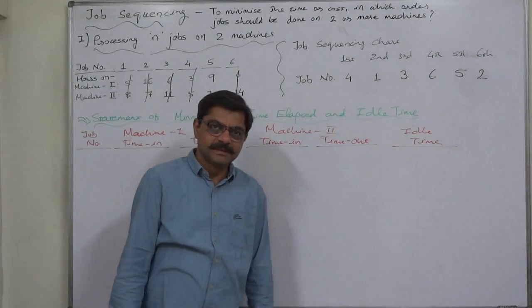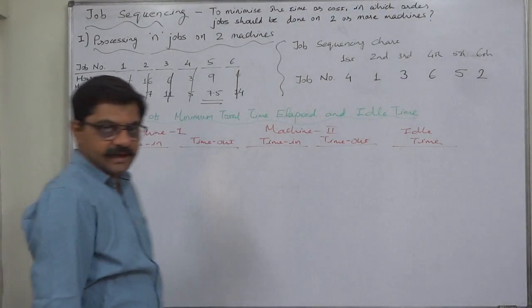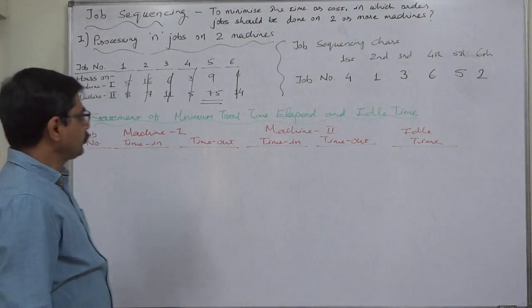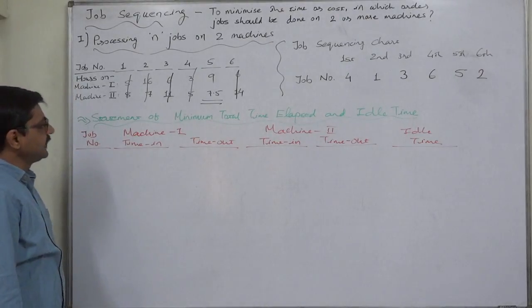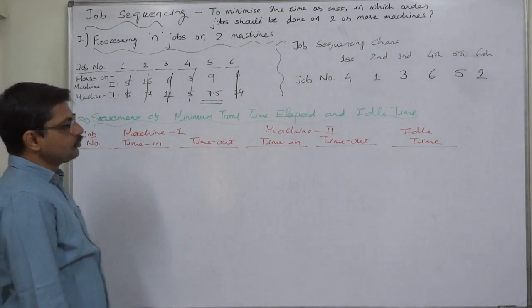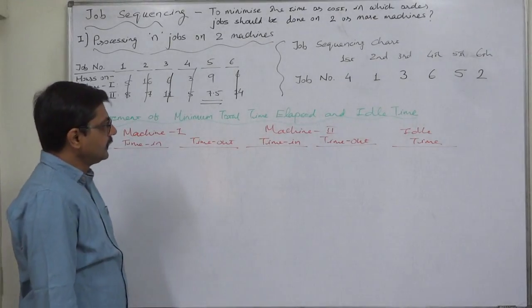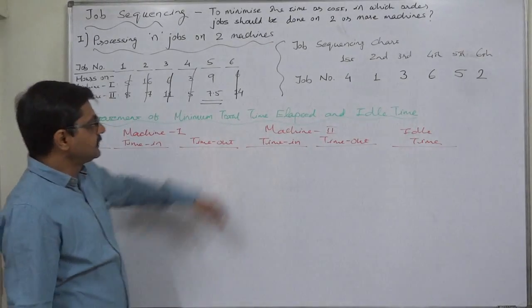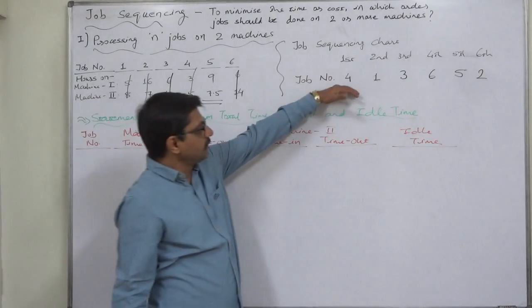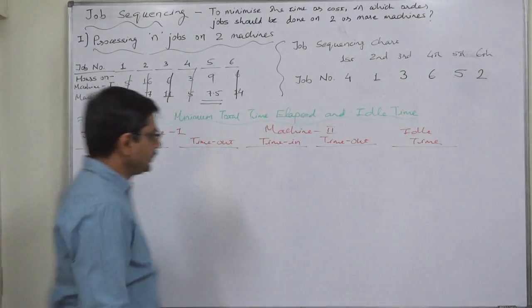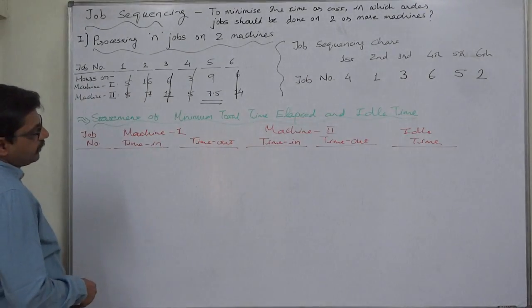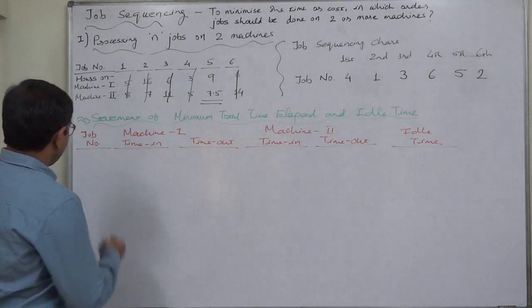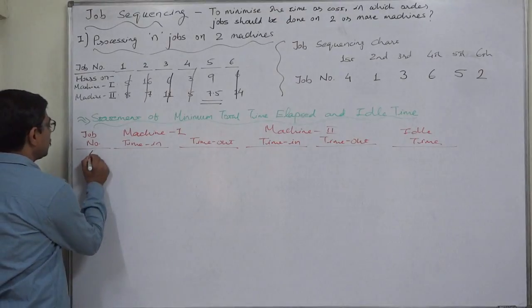Hello and welcome. This is the second part of the solution of the problem of processing jobs on two machines. This is the job sequencing of our choice. First of all, we are going to start with job number 4.